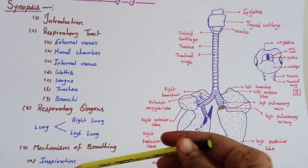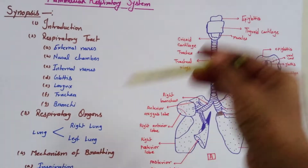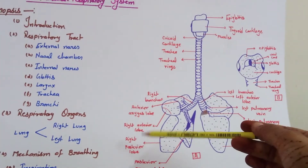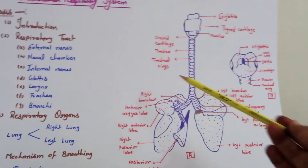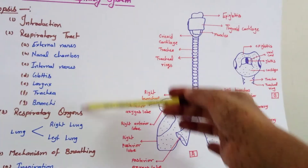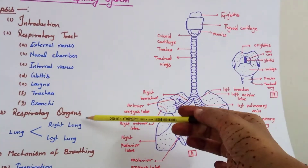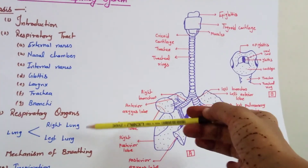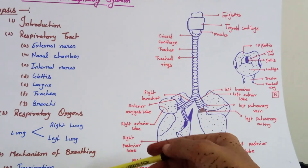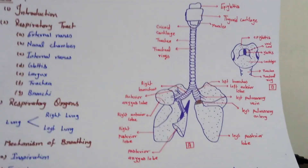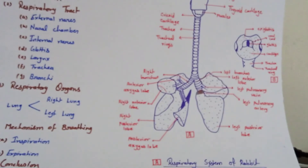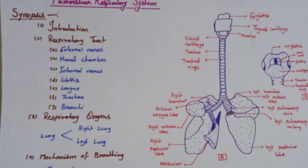This is all about the mechanism of the respiratory system. To summarize: first the respiratory tract, second the respiratory organ, and third breathing — that is inspiration and expiration. This is how the breathing of the rabbit is completed. Thank you so much for watching; if you like my video please subscribe.